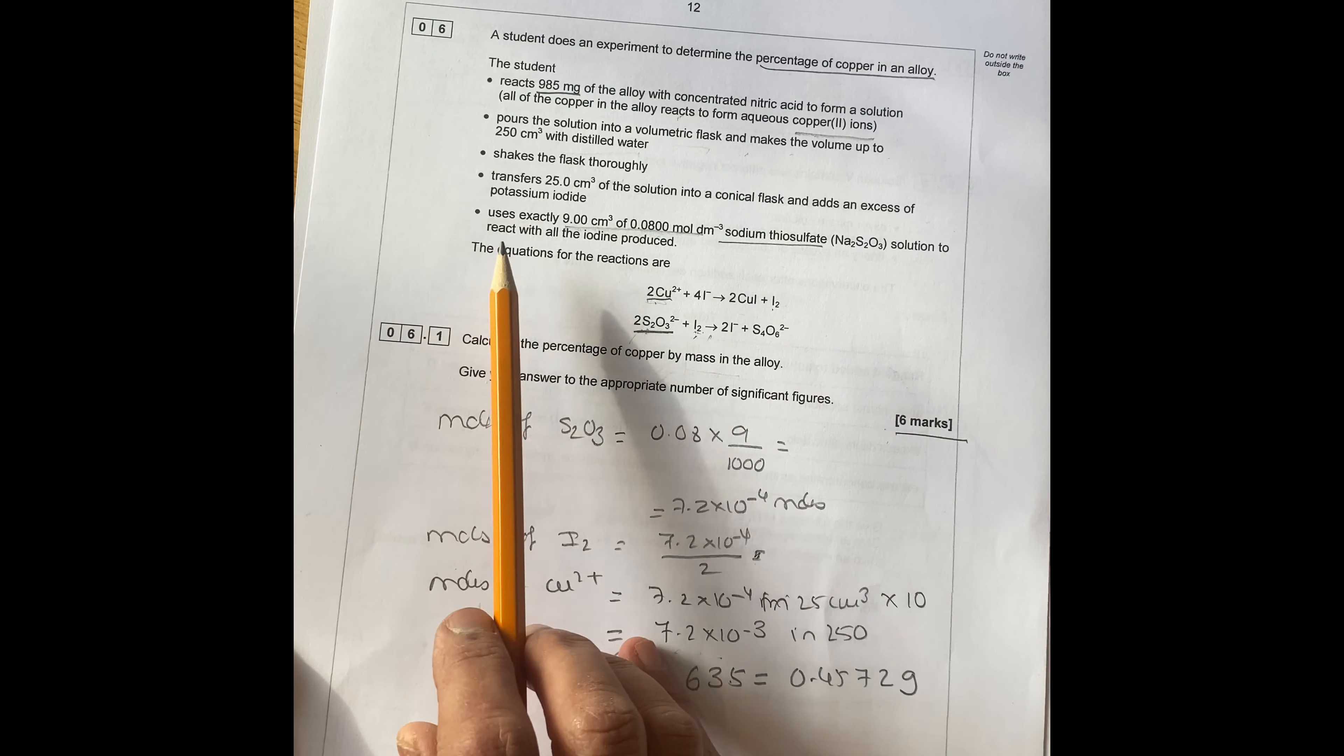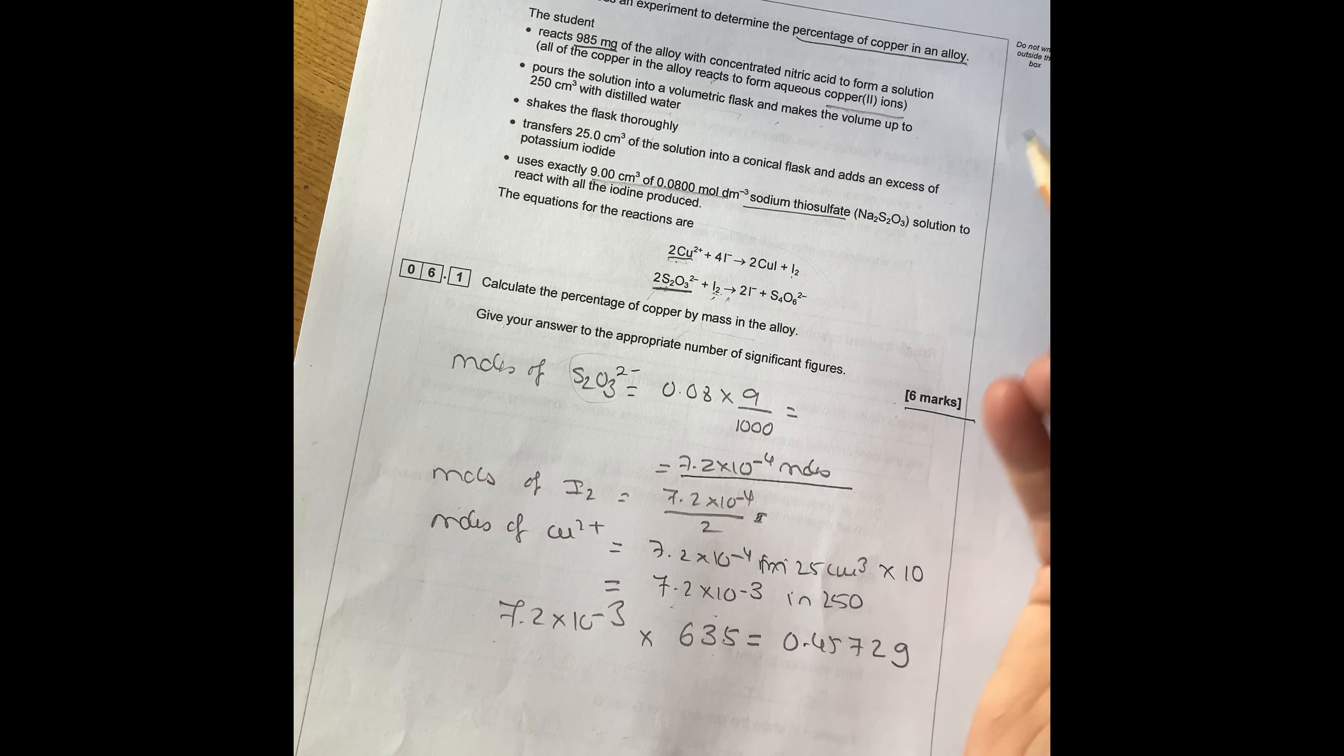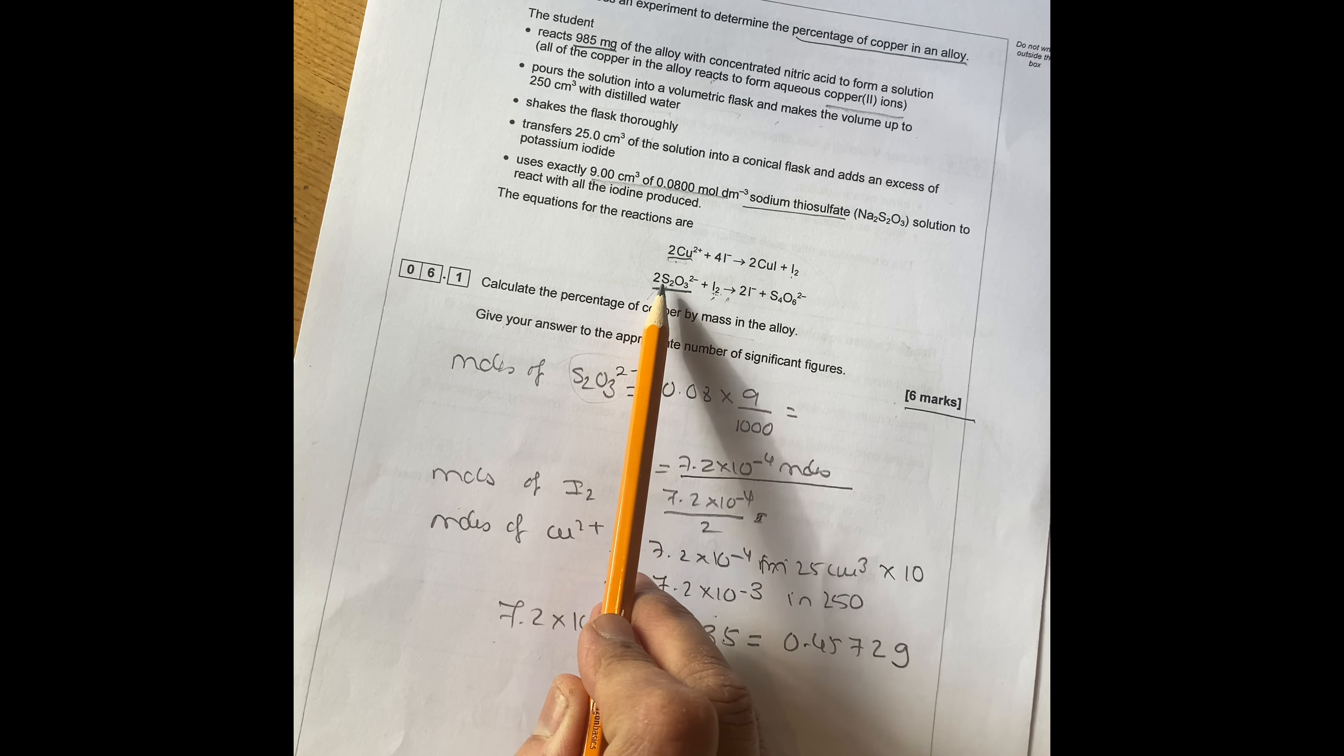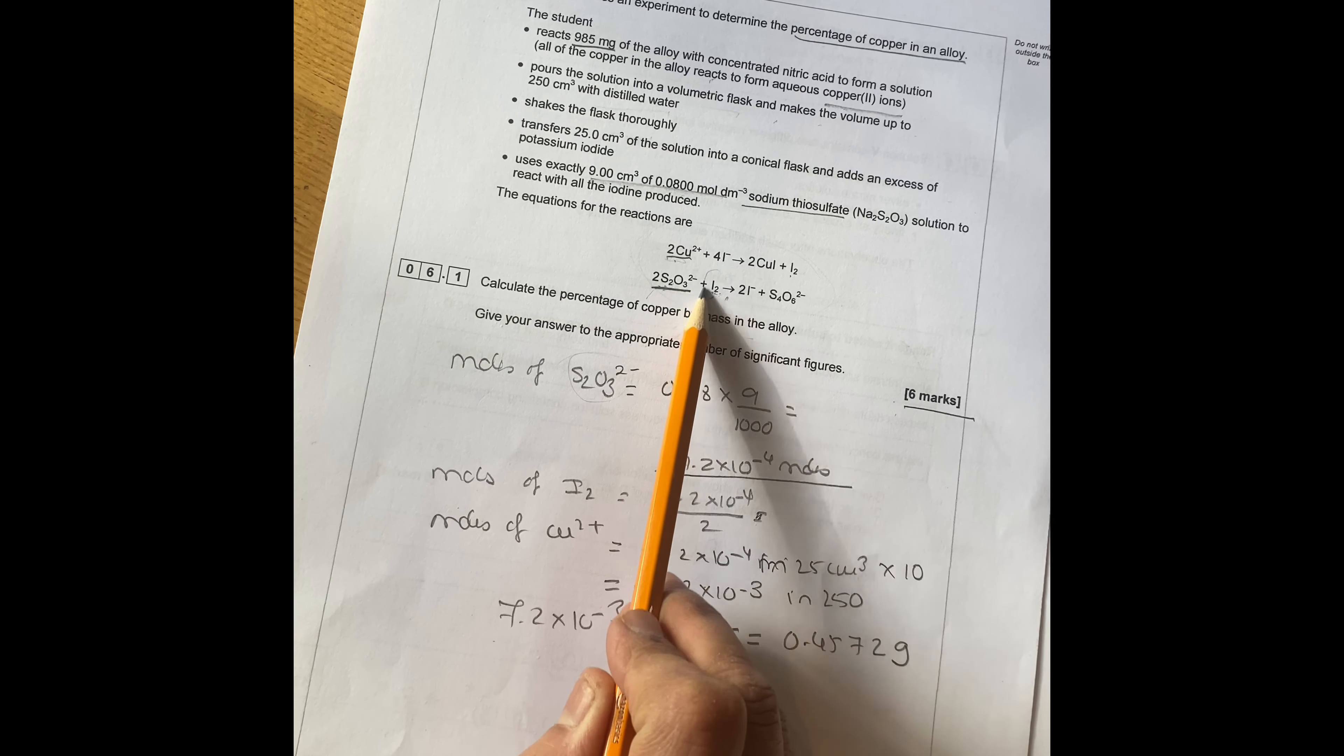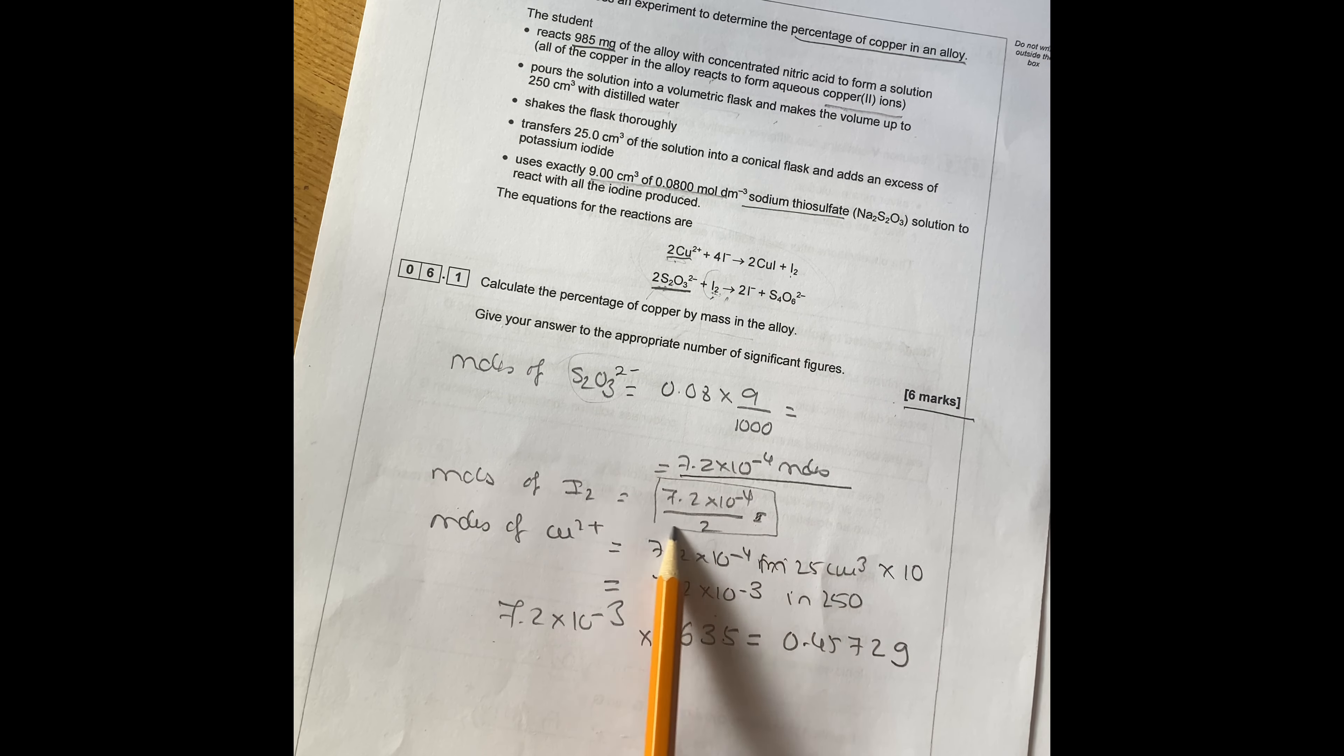So how did I do that? Start first of all, calculate moles of thiosulfate here, which is 0.08 times 9.9 divided by 1,000, which gives you 7.92 times 10 to the minus 4 moles of thiosulfate. Then if you look at this ratio here, 2 moles to 1 mole, so moles of iodine is half. I just put here as a half.